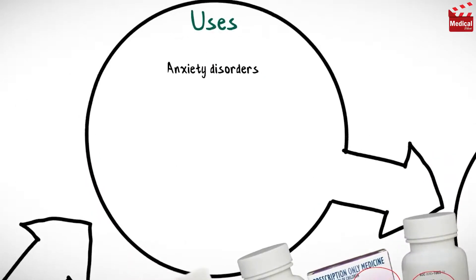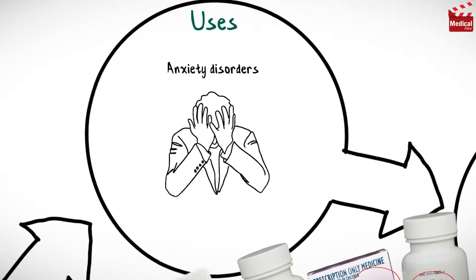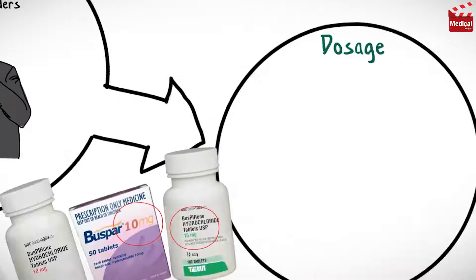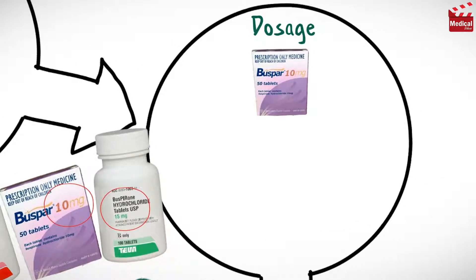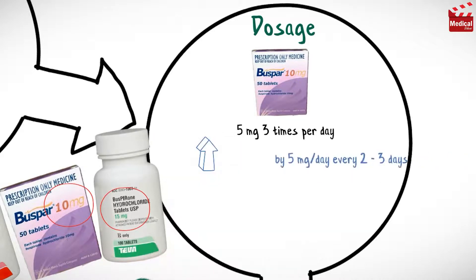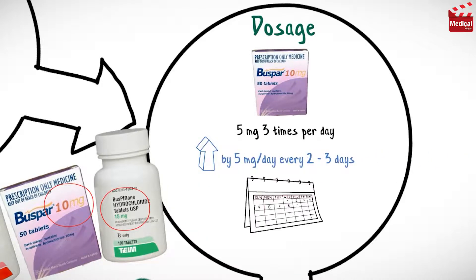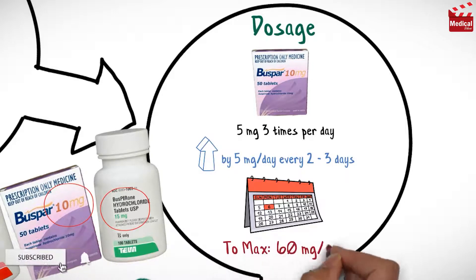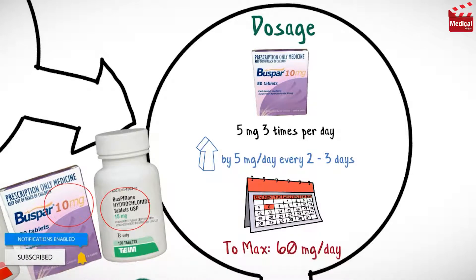Buspirone is used in the treatment of anxiety disorders. The usual initial dose for adults is 5 mg 3 times per day, that may be increased by 5 mg per day every 2–3 days to achieve the desired effect, to a maximum dose of 60 mg per day in divided doses.